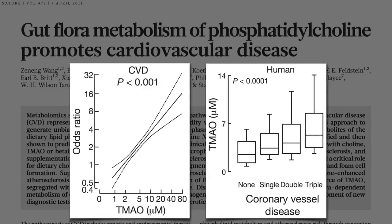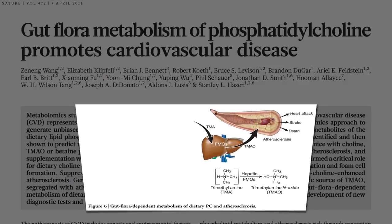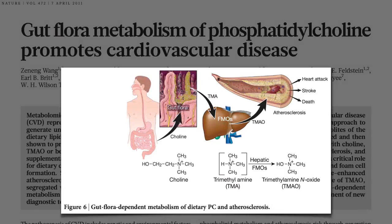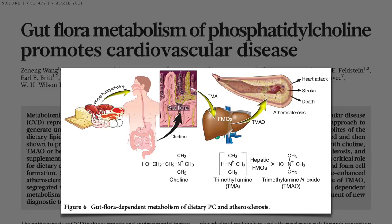Where does this TMAO come from? Our liver turns TMA into TMAO. Where does TMA come from? Certain bacteria in our gut turn something in our diet called choline into TMA. Where is the highest concentration of choline found? Eggs, milk, and meats, including poultry and fish. So when we eat these foods, our gut bacteria may make TMA, which is absorbed into our system and oxidized by our liver into TMAO, which may then increase our risk of heart attack, stroke, and death.